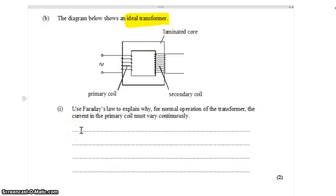Use Faraday's law to explain why, for normal operation of the transformer, the current in the primary coil must vary continuously. Well, you can't just put a DC current in there. You have to have an AC current.